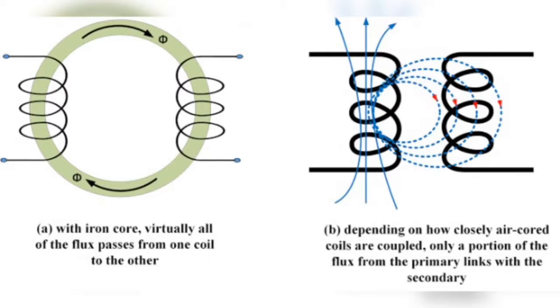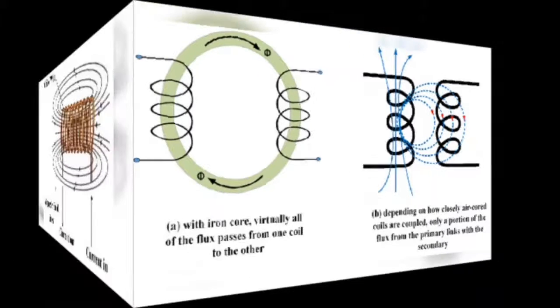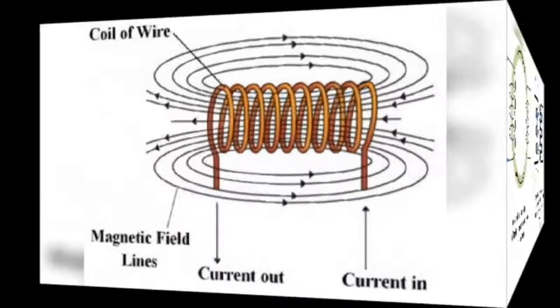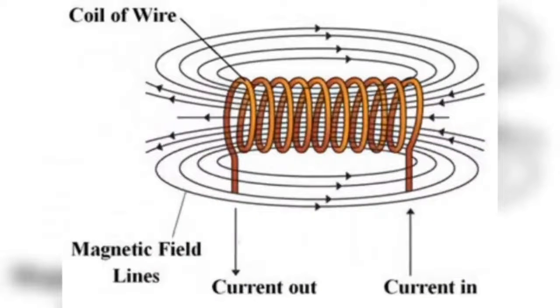This will also result in more value of voltage induction into the wire when the original voltage source is put off, or into another wire placed in the magnetic field produced by this original voltage source.